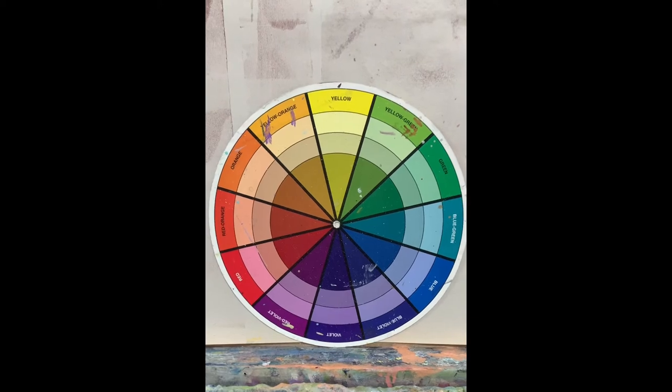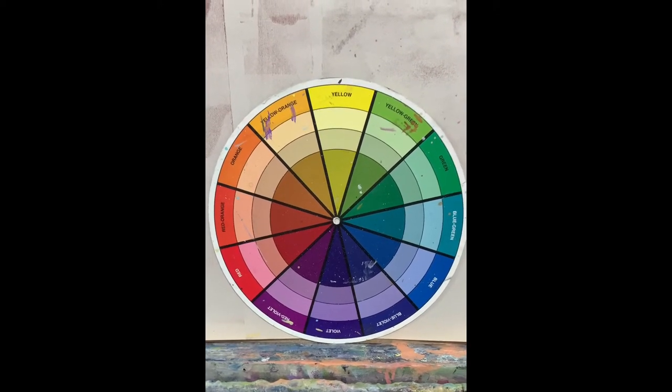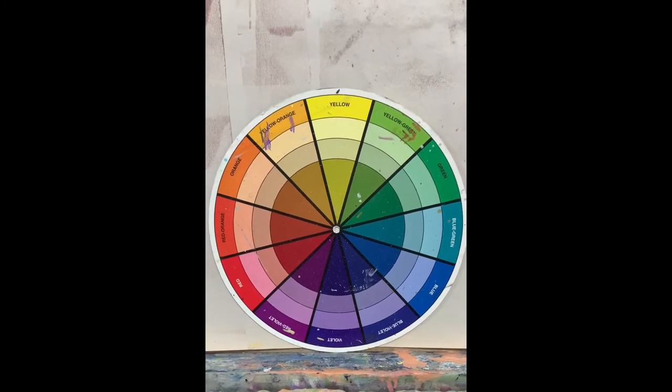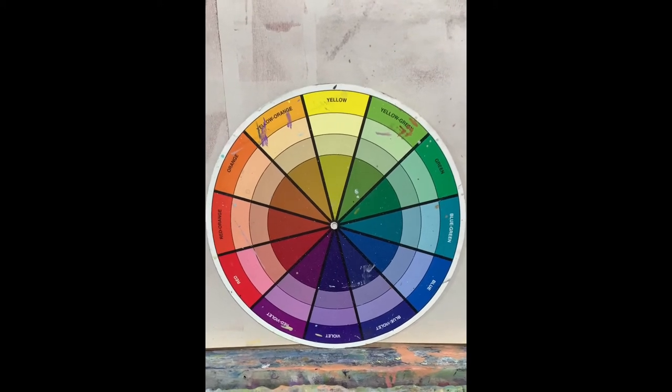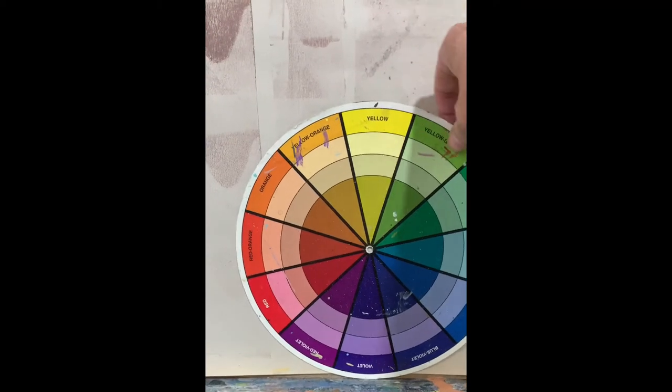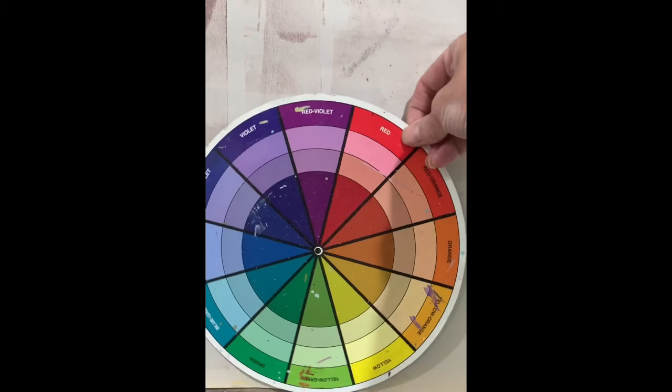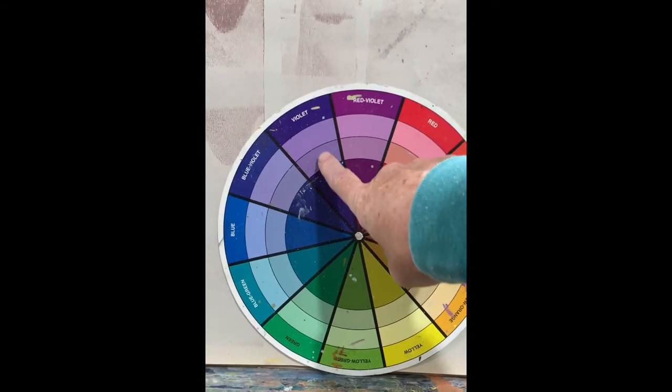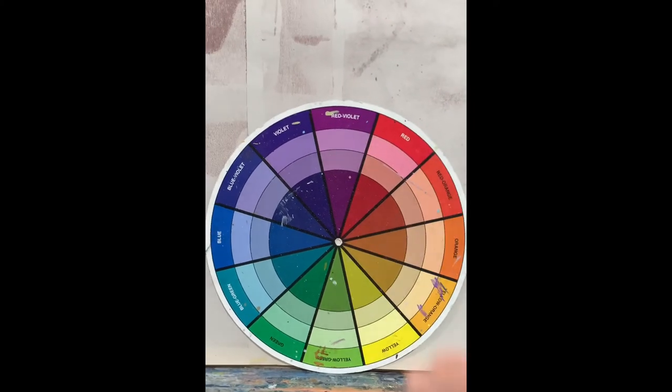When I went in to do some line work with one of my inktense blocks, I accidentally grabbed a red violet instead of a violet and didn't realize it until I activated it. So the red violet, I will move that to the top here. So instead of making my line work with a violet color, like I had intended, I did it with this red violet color.